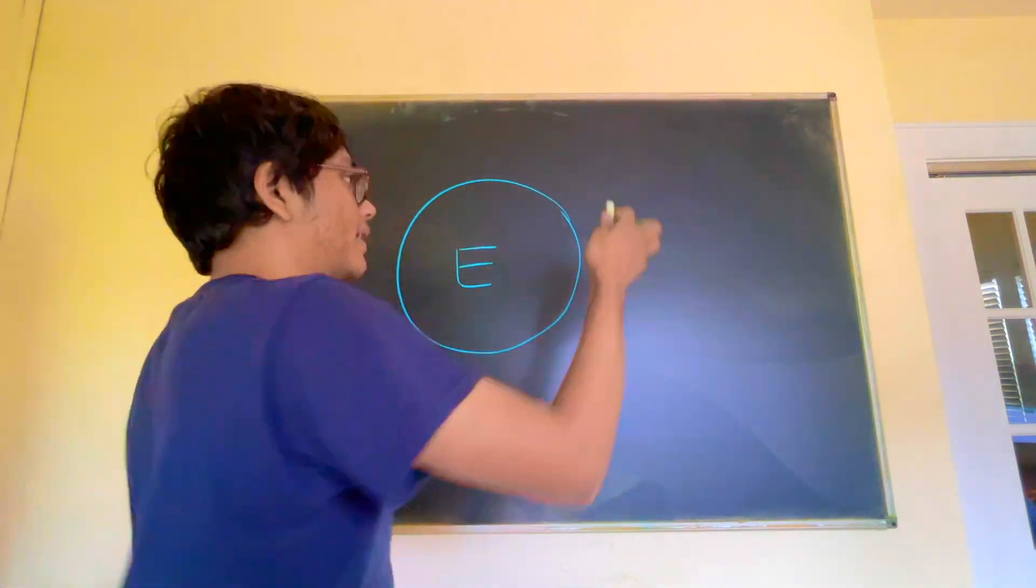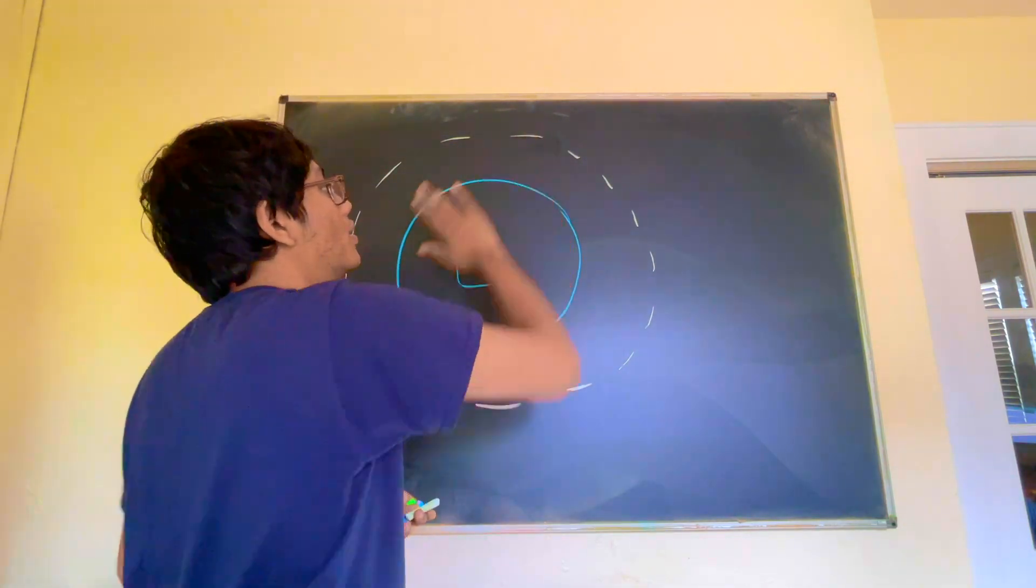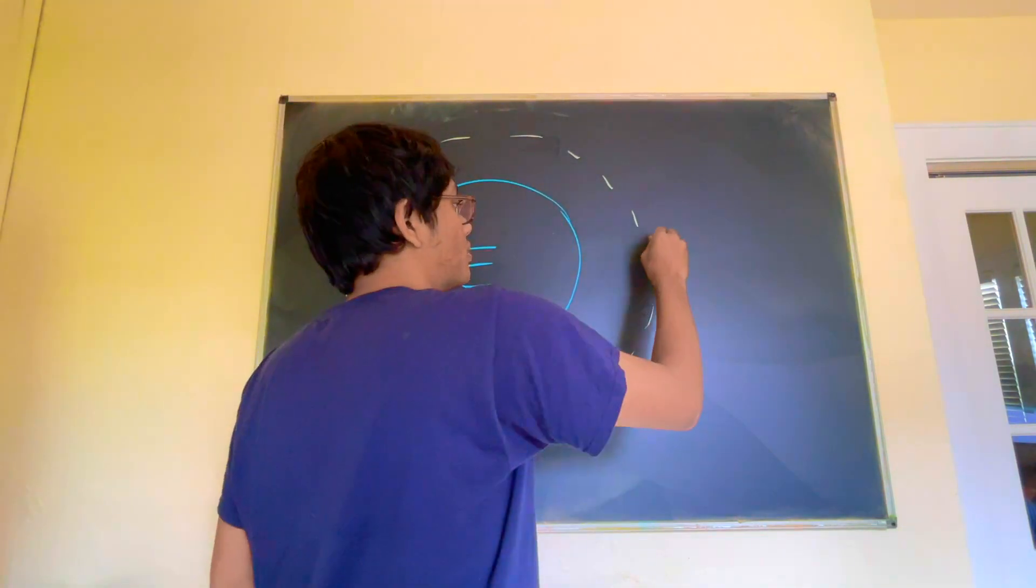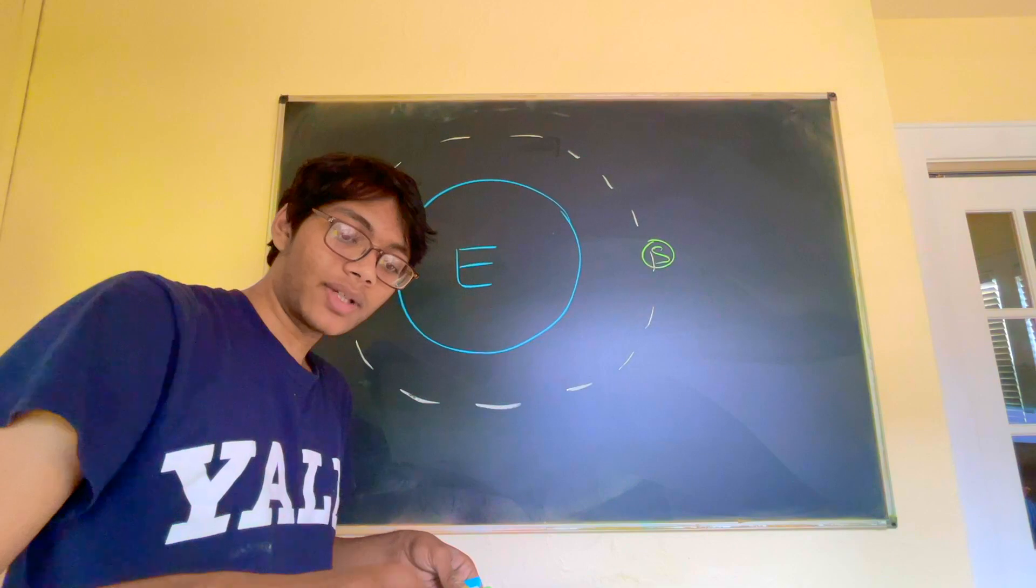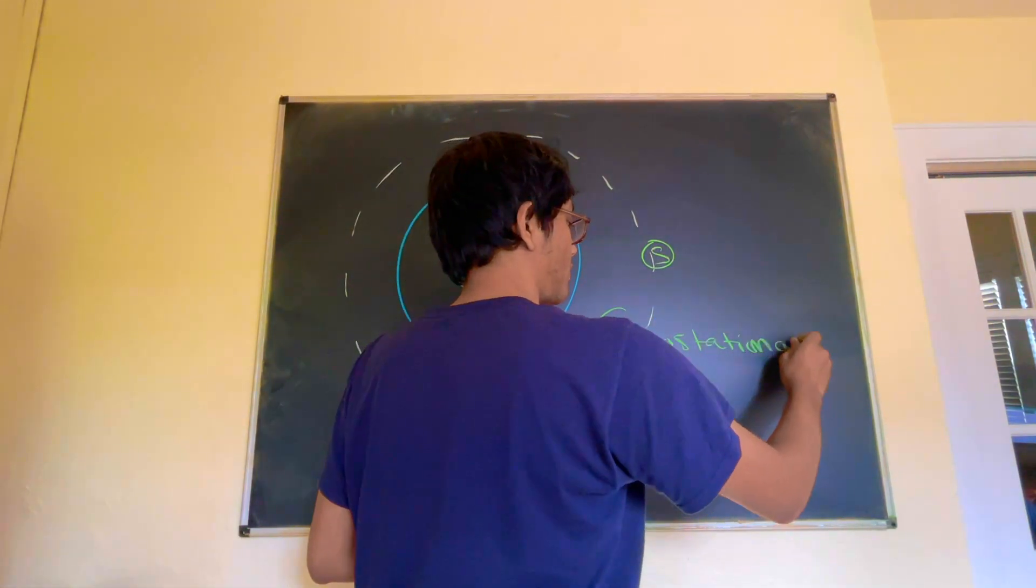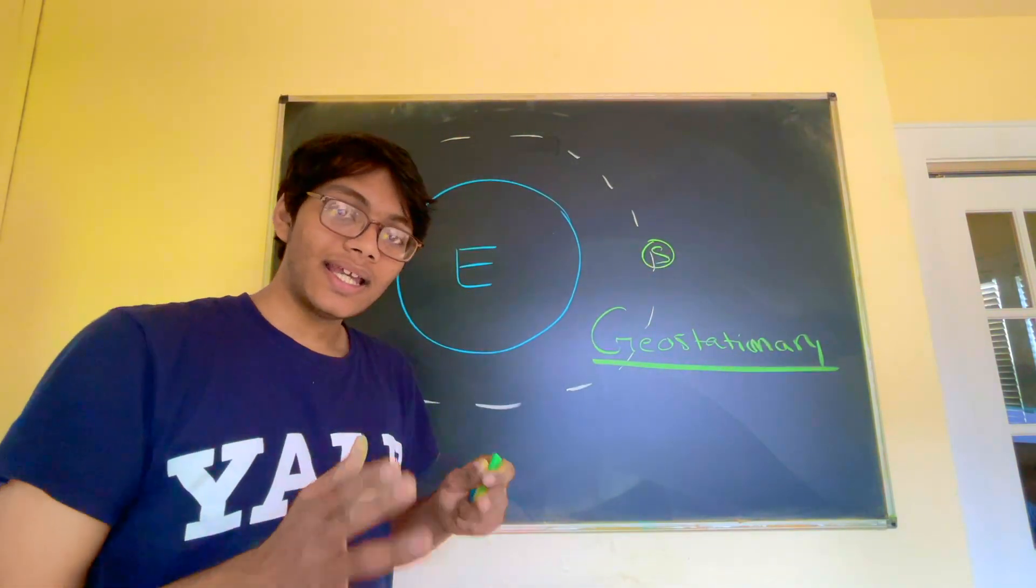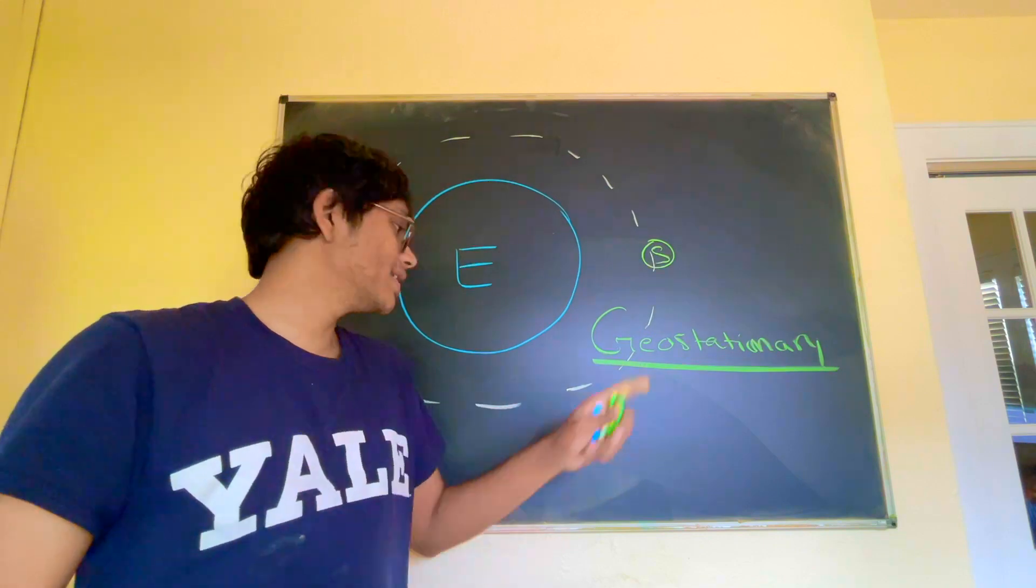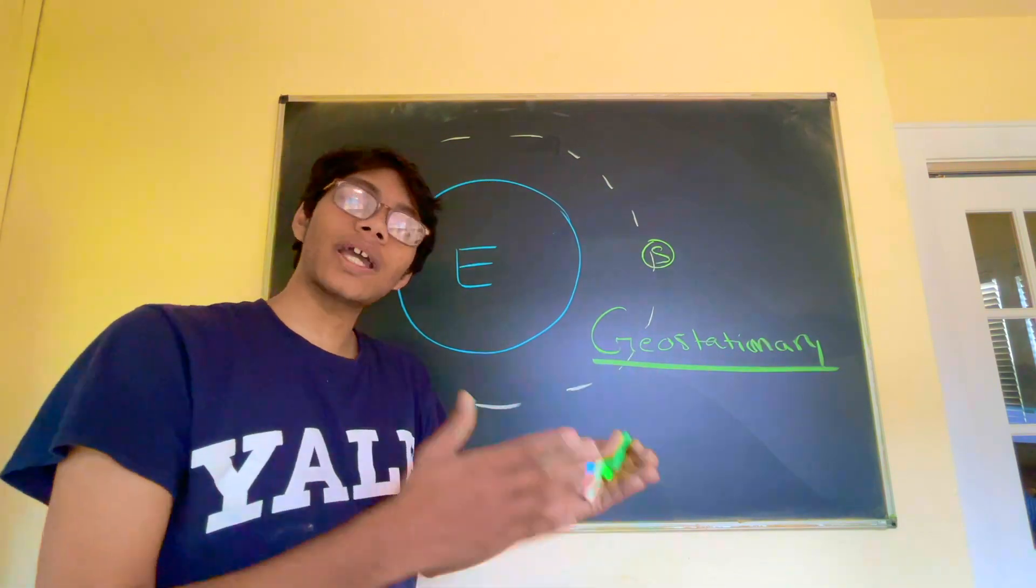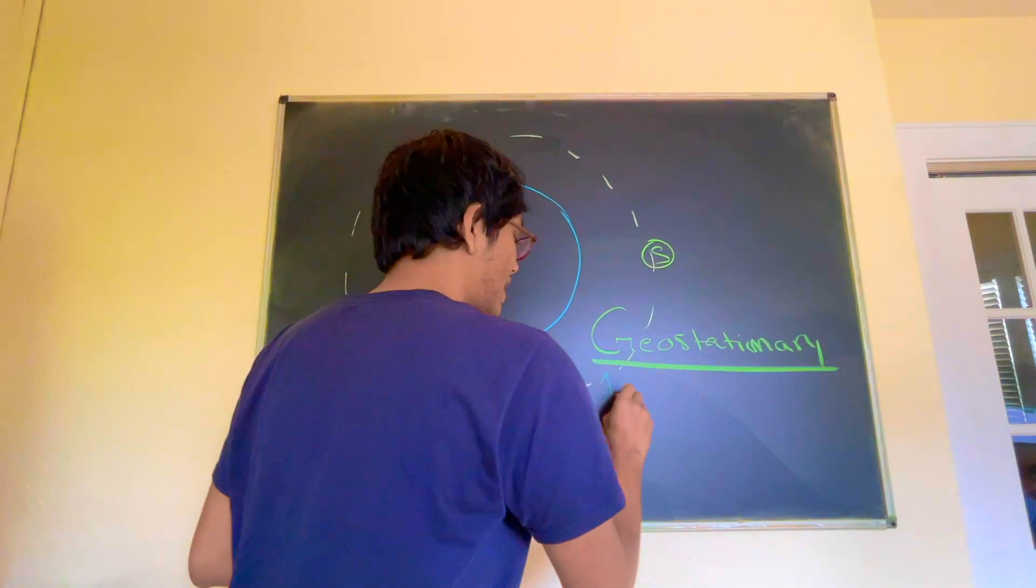Alright folks, so let's first draw the Earth right here. Let's say our satellite is in circular orbit around the Earth. So that right there is its circular orbit. Here is the satellite. And let's say this satellite is in a geostationary orbit. What is a geostationary orbit? You might ask. A geostationary orbit works like this. Imagine you see a satellite in the sky and the next day you see the same satellite in the same exact spot.